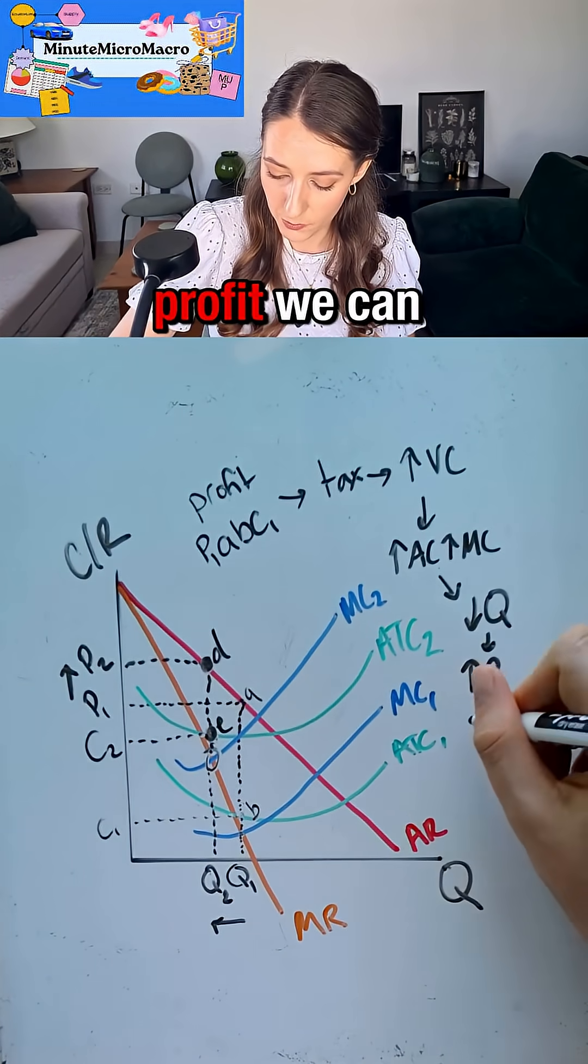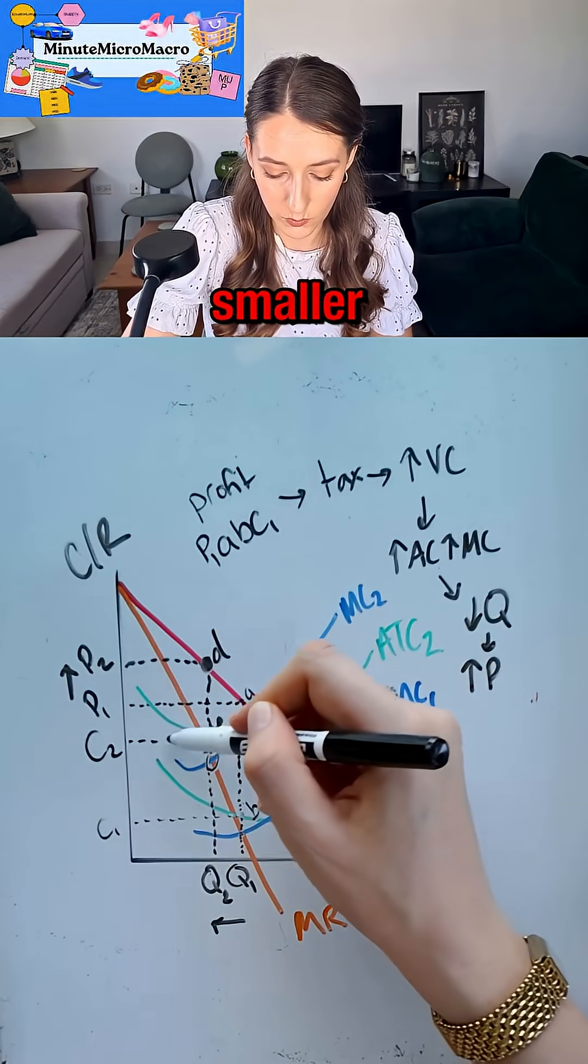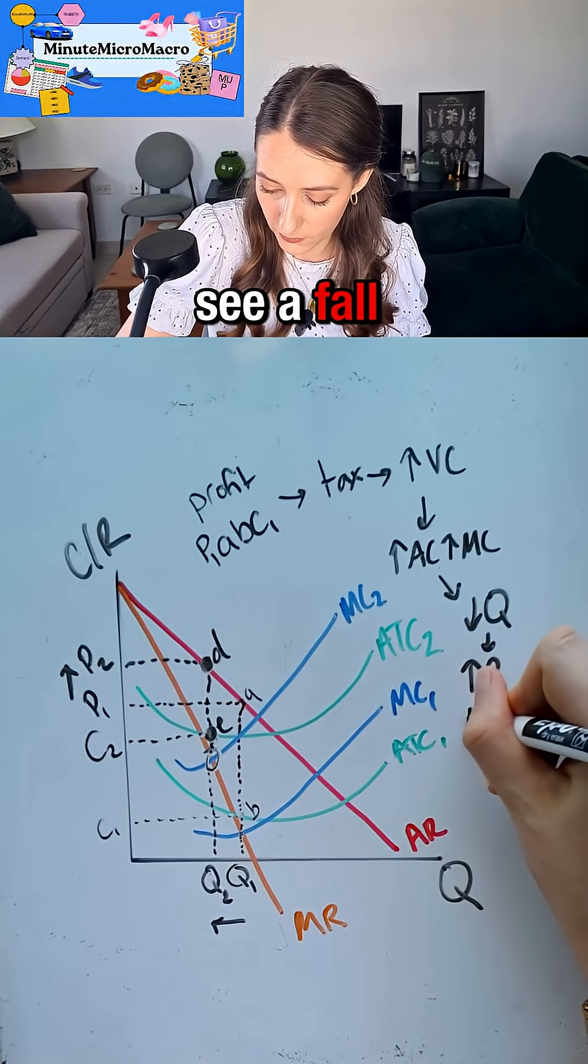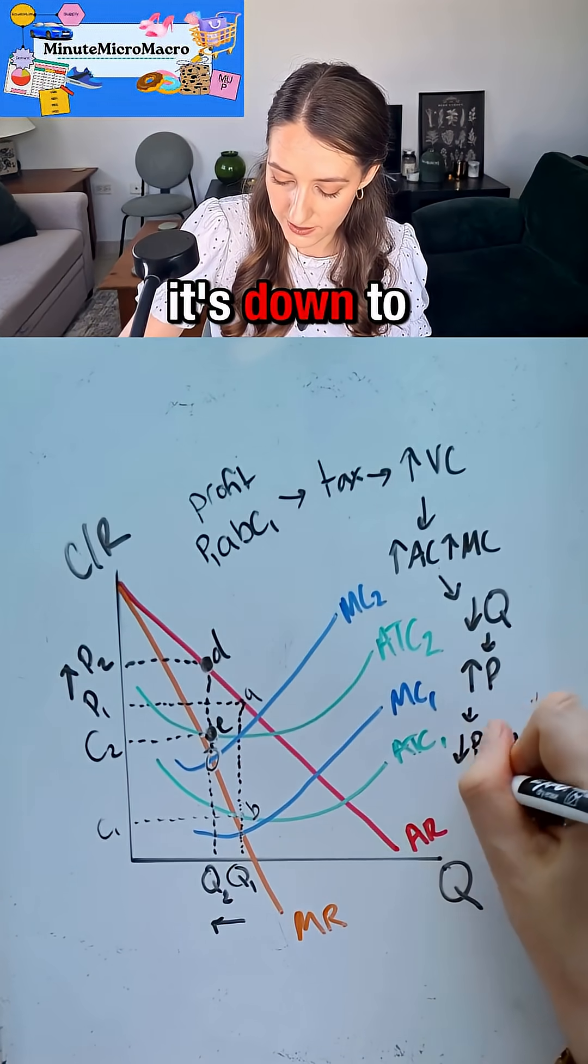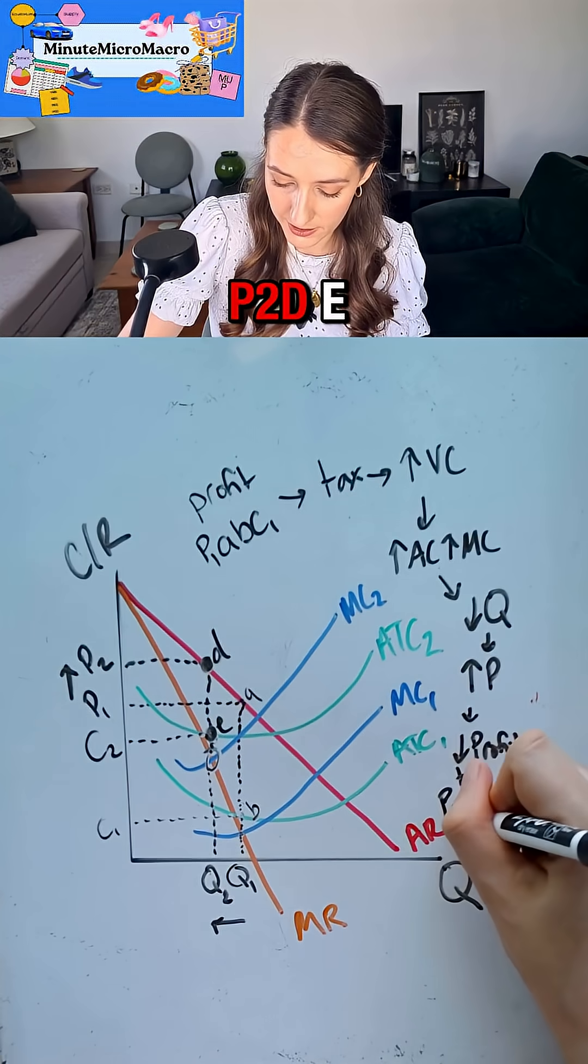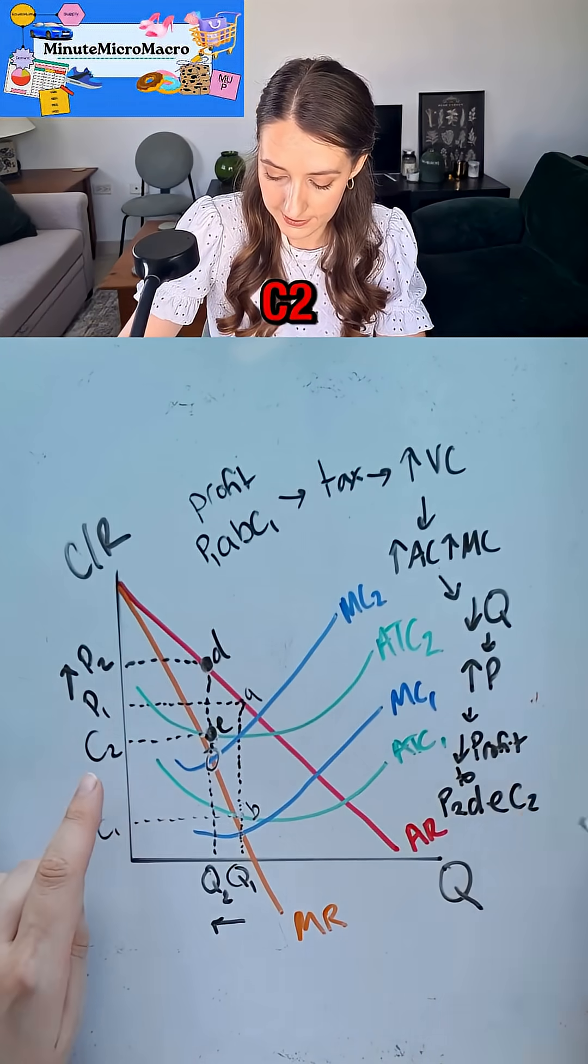And so my profit, we can see, has got smaller and I'll highlight that in a moment. So I'm going to see a fall in profit and it's down to P2DEC2.